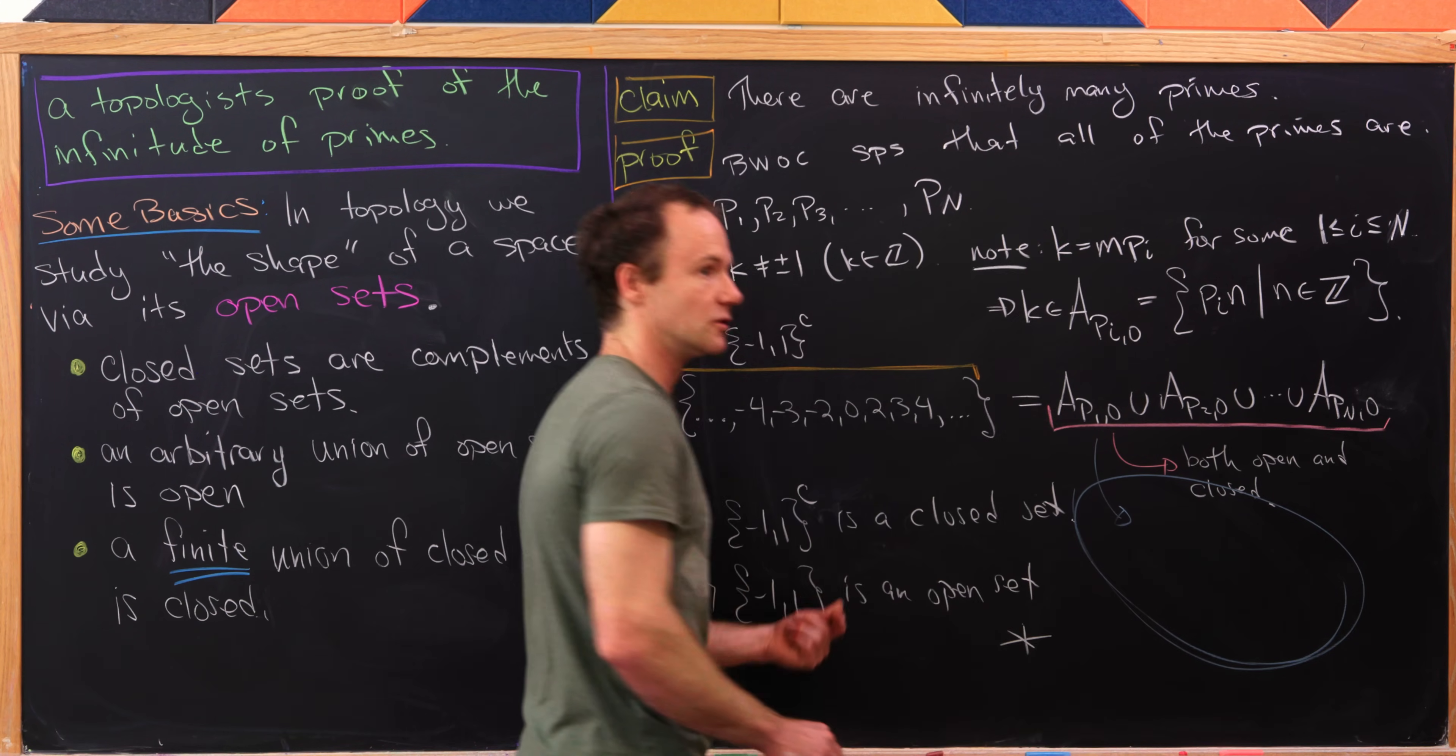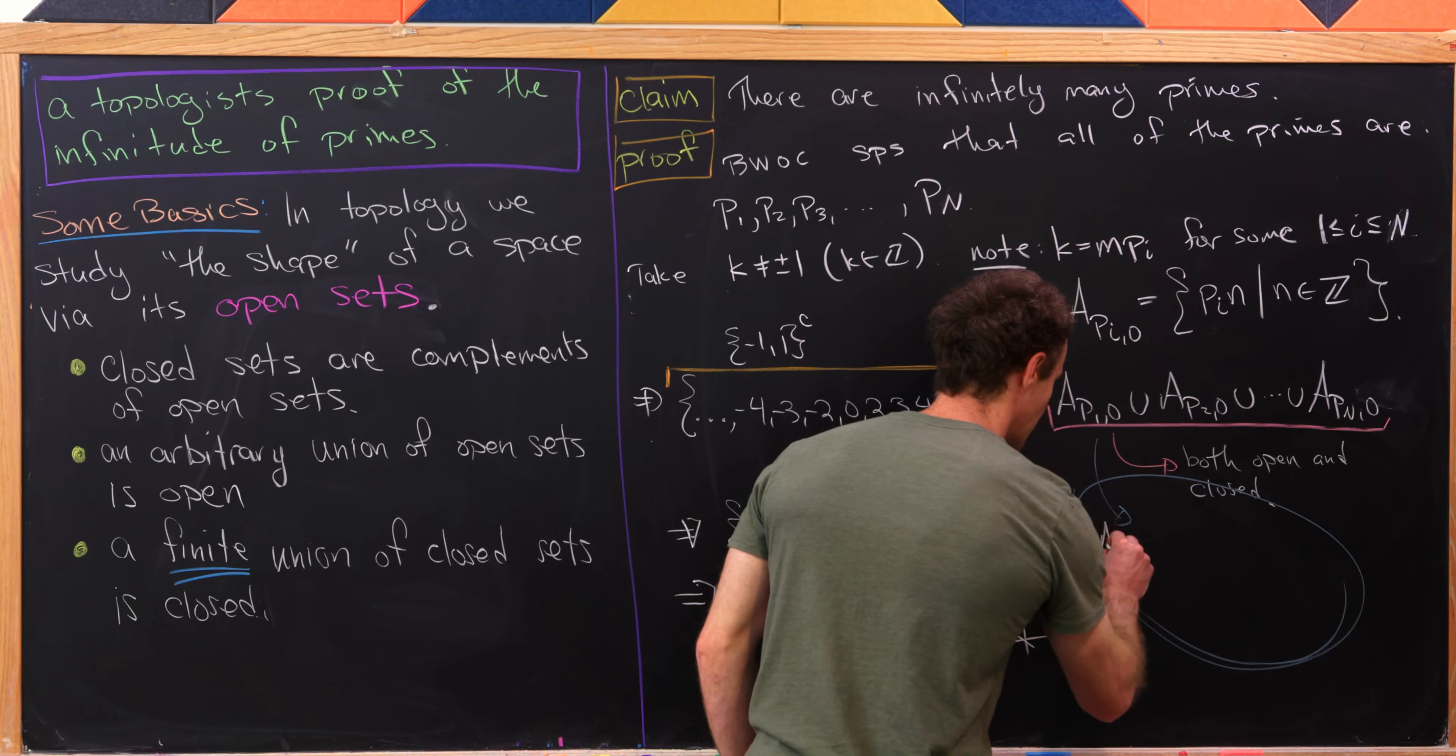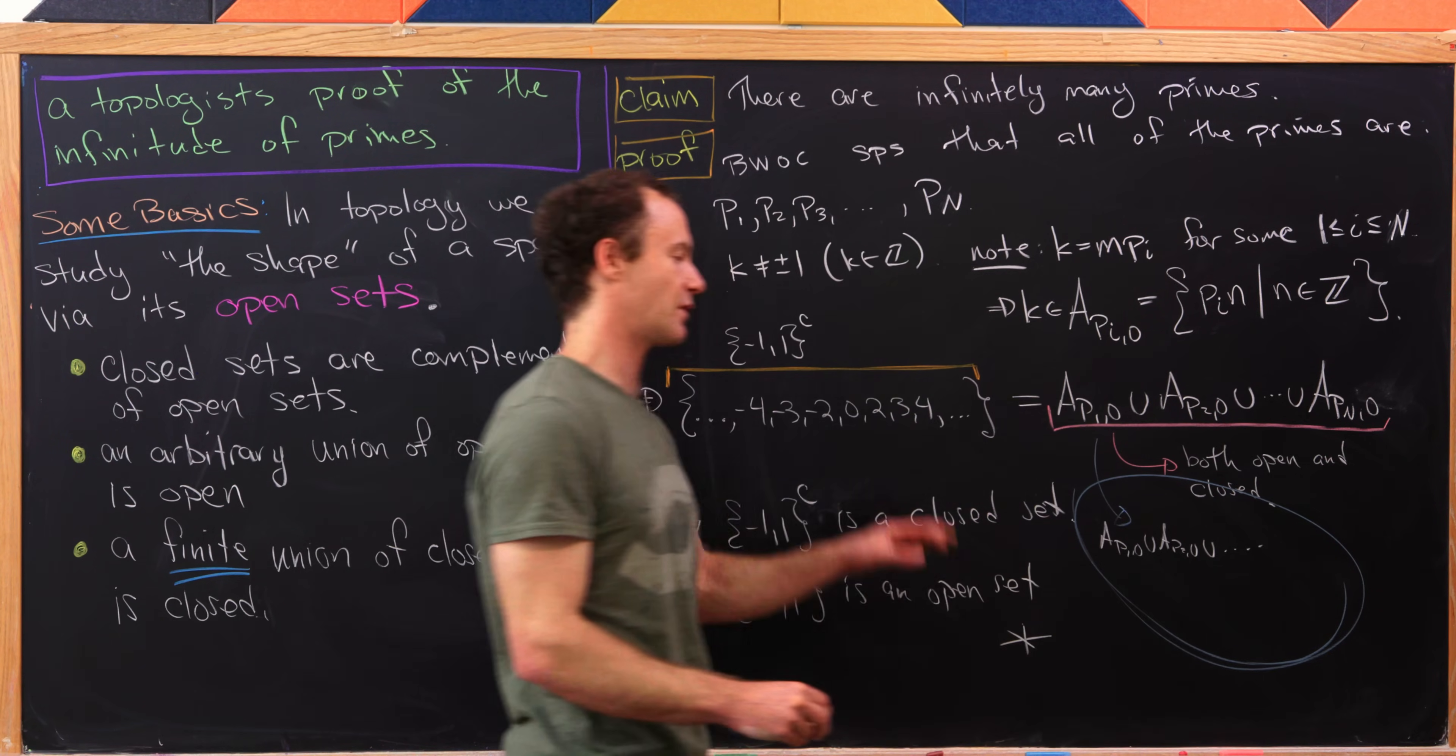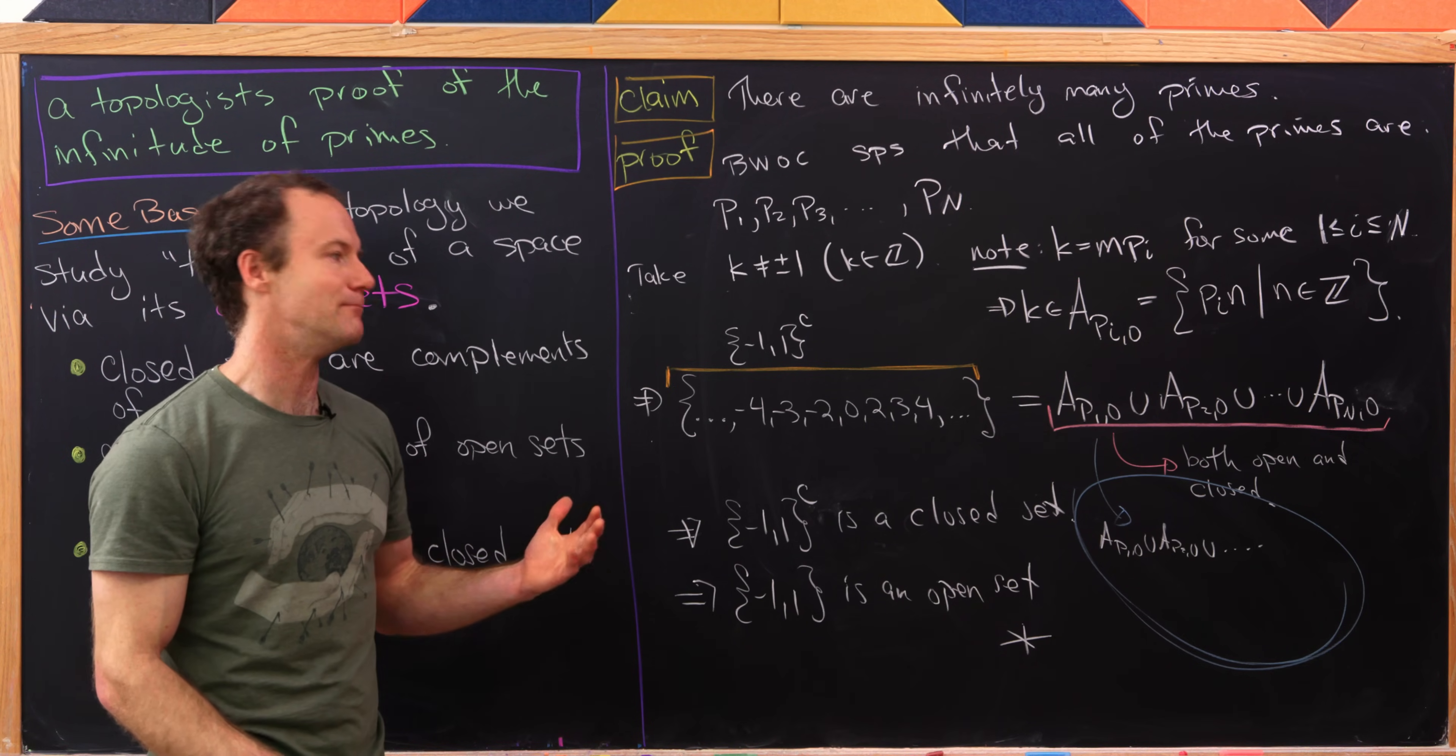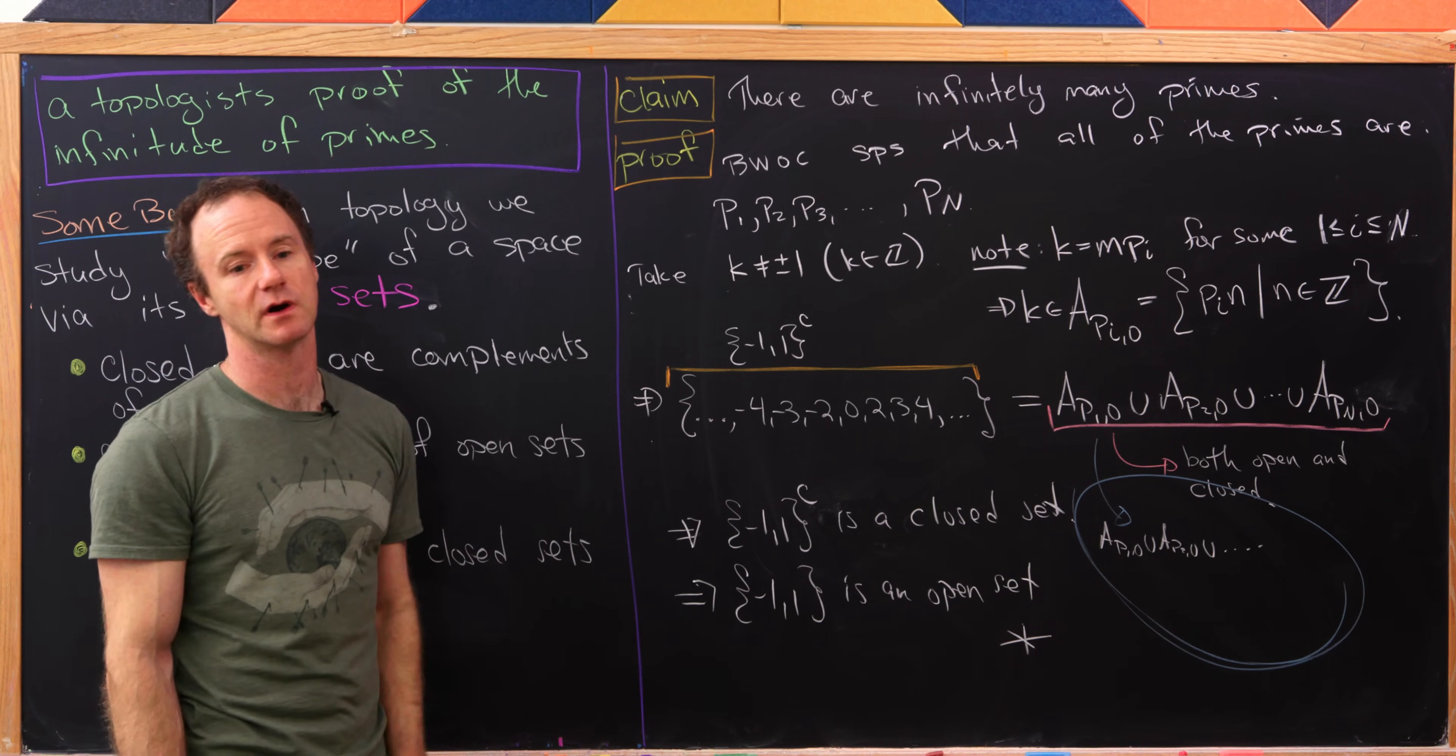So in fact, if we look at the true fact, which is there are infinitely many primes, then this union right here would be A p1, 0 union A p2, 0 union, so on and so forth. We would have an infinite union. But an infinite union of closed sets may not be closed. And in this case, as we saw, it's not closed because that leads us to our contradiction.